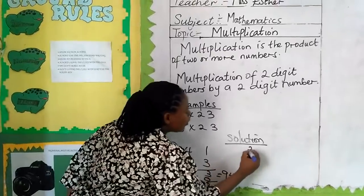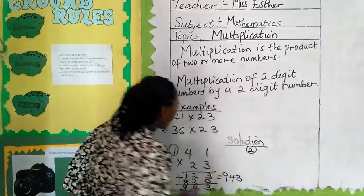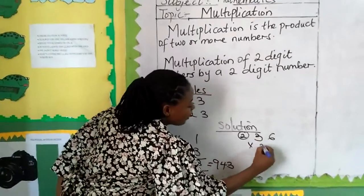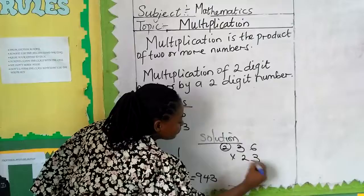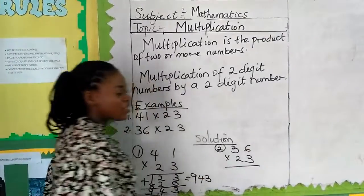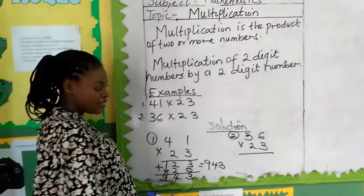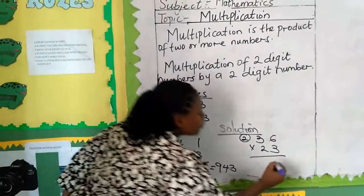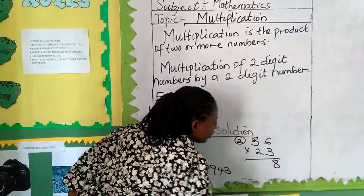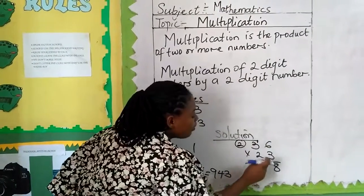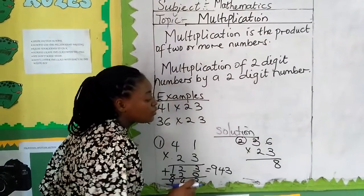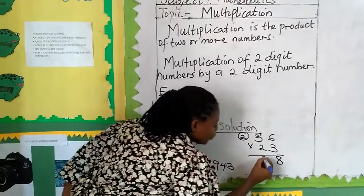Let's look at the other example. We have 36 multiplied by 23. 3 multiplied by 6 gives us 18, so we are writing 8. Remember to put your 1 here. 3 multiplied by 3 gives us 9 plus 1, which is 10.